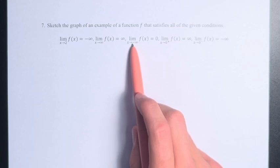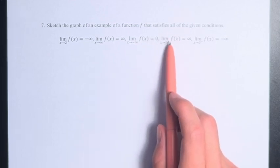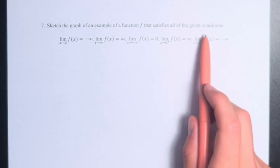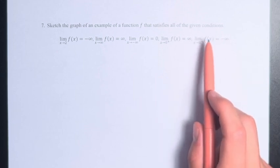The limit as x approaches negative infinity is equal to 0. The limit as x approaches 0 from the right of f(x) is equal to infinity, and the limit as x approaches 0 from the left is equal to negative infinity.